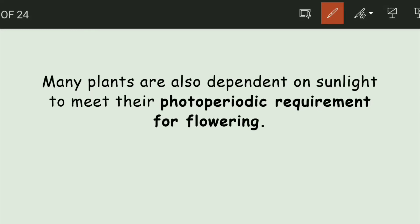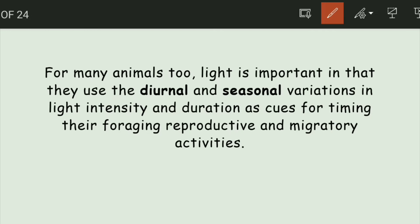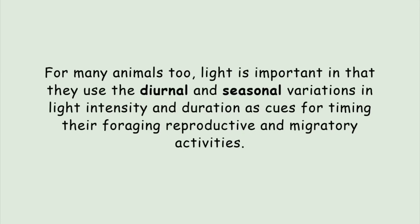Many plants depend on light for flowering, known as photoperiodic requirements. There are day-neutral plants, long-day plants, and short-day plants — it depends on how long the light period must be for flowering to occur. For many animals, light is also a major factor influencing diurnal and seasonal variations in light intensity and duration, affecting their reproductive and migratory activities.